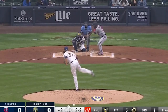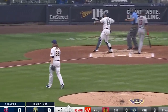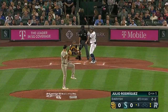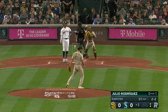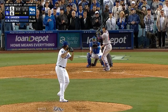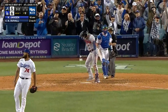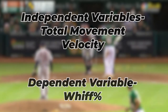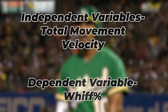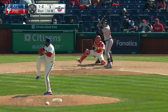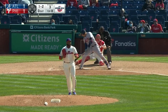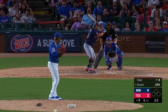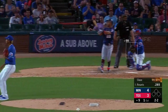In this video, I created a model to determine what the perfect cutter is. When researching the data on cutters, I found a correlation between the speed in miles per hour, total movement in inches, and whiff rate, which is the number of swings and misses divided by pitches swung at. Using total movement and velocity as independent variables and whiff percentage as a dependent variable, I was able to create a model to predict the success rate of cutters. If you are unsure of how I got to this point and want to know more details on why this model works and is statistically significant, check out my website in the description for more details.